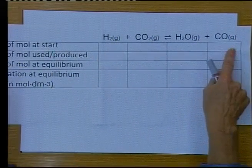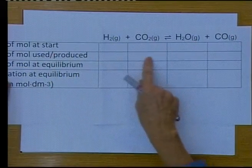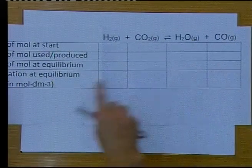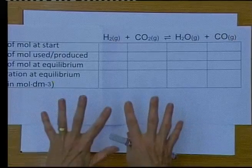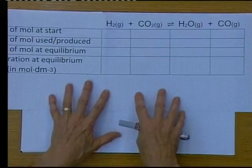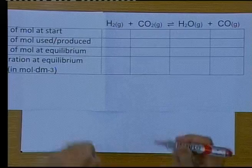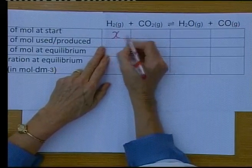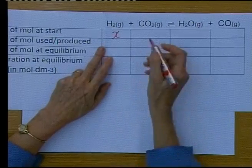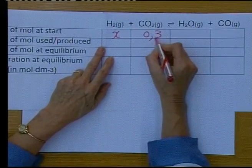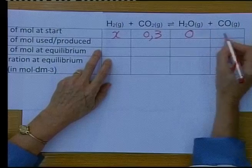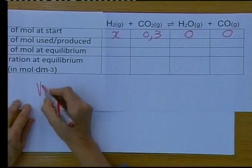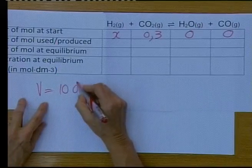You've got the equation there and you draw columns for each one of those substances that are involved. You draw four rows and this will always be the same: the number of moles of each one at the start, the number of moles you have used or produced, the number of moles at equilibrium, and the concentration at equilibrium. Then you calculate your equilibrium constant. Let's fill in what they've got.